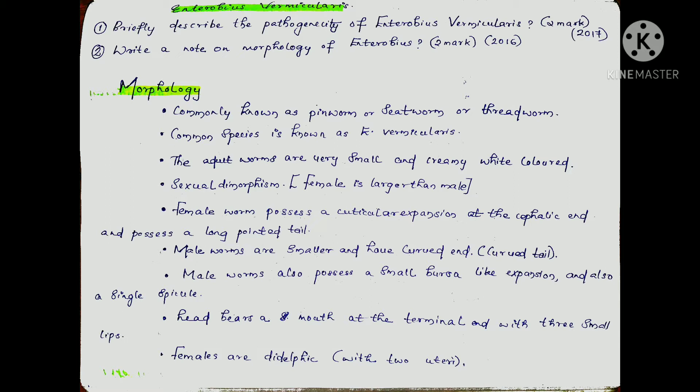Male worms are smaller and have a curved tail. Male worms also possess a small bursa-like expansion and a single spicule. The mouth is terminal with 3 small lips. Females are didelphic, meaning they have 2 uteri.